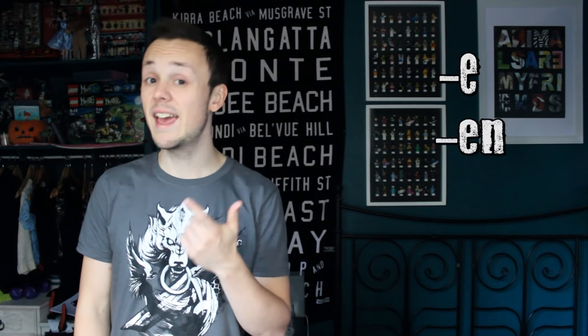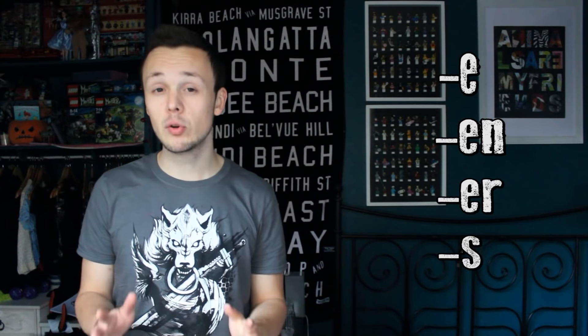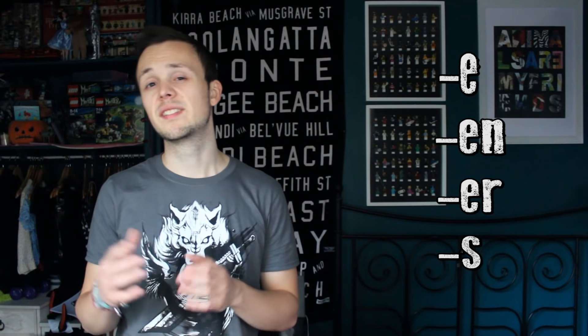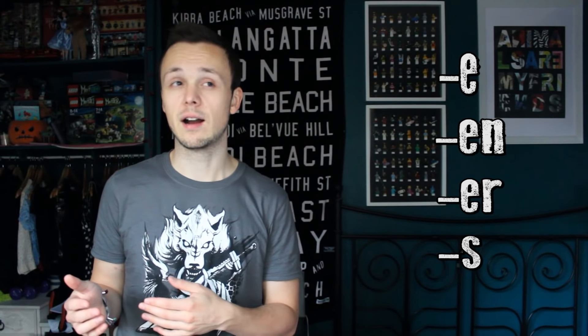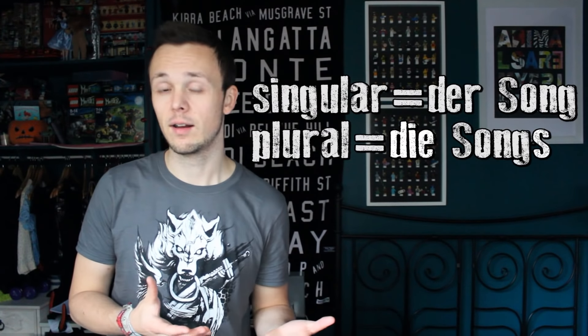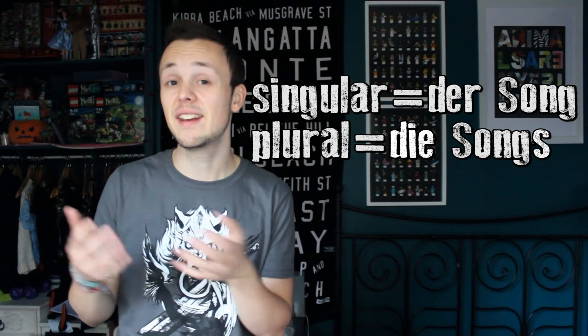The German language knows several suffixes to form the plural. The most important suffix is the suffix E. The words that use the suffix S to form the plural are mostly imported from, for example, English — like 'Song', 'Die Songs' — we just simply add an S. But of course there are not only the different suffixes to form the plural; also vowels change, though they don't change every time.